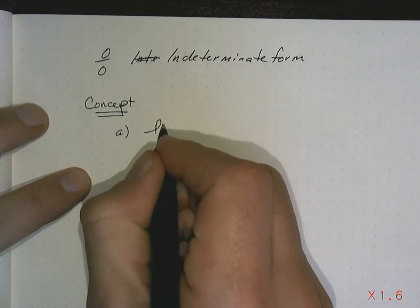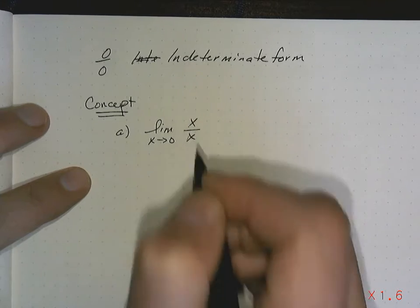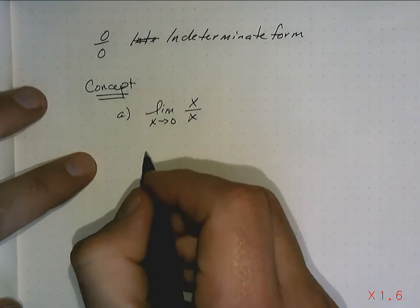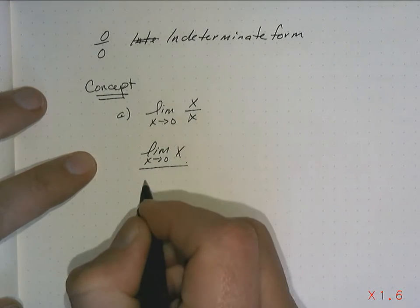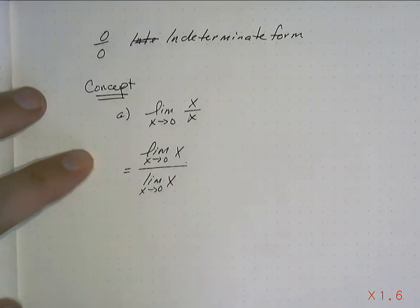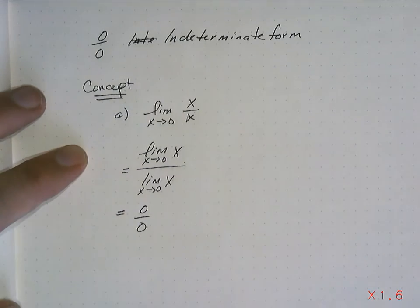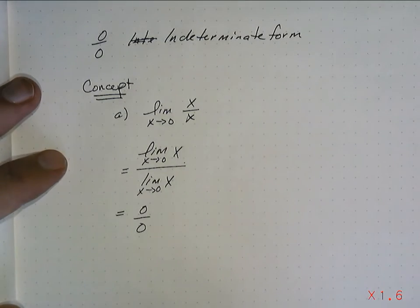Let's say I have the limit as x approaches 0 of x over x. So using my limit properties, you know that you're going to get the limit as x approaches 0 on the top, and you're going to get the limit as x approaches 0 on the bottom. And from that, you know that you're going to get 0 over 0, which is the indeterminate form.